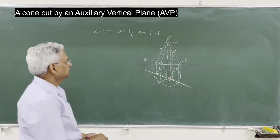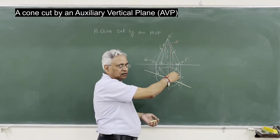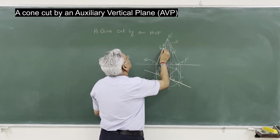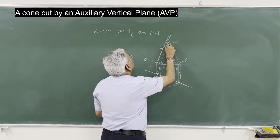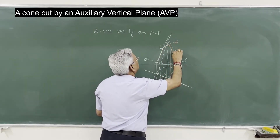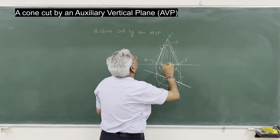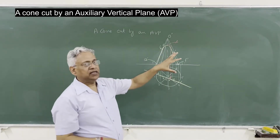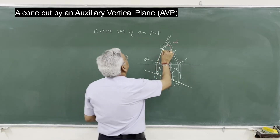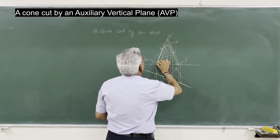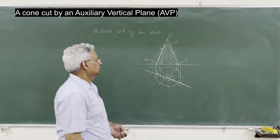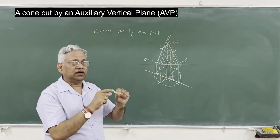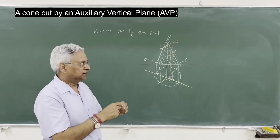Now these are 6 points — A, B, C, D, E, F — so join them by a smooth curve, and you get the elevation of the cut section. But remember, this is the elevation of the cut section — this is not the true shape of the cut section, because the true shape is reflected or projected onto a plane which is parallel to this cutting plane.